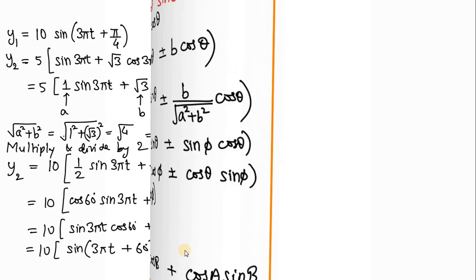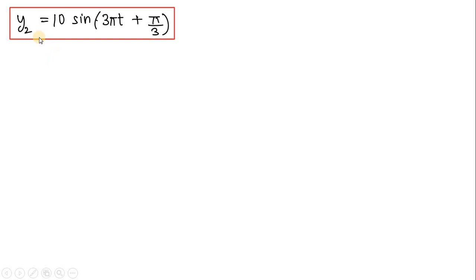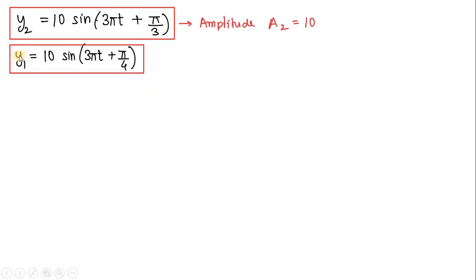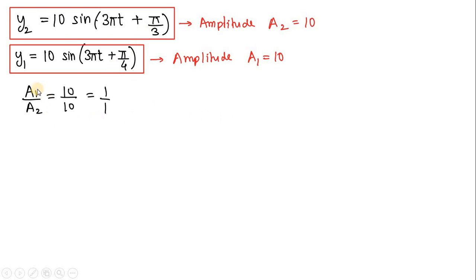Finally, we obtain y2 = 10 sin(3πt + π/3), since 60° = π/3. And y1 was given as 10 sin(3πt + π/4). By comparing both expressions, the amplitude of y1 is 10 and the amplitude of y2 is also 10. Therefore the ratio of amplitudes A1 : A2 = 1 : 1.